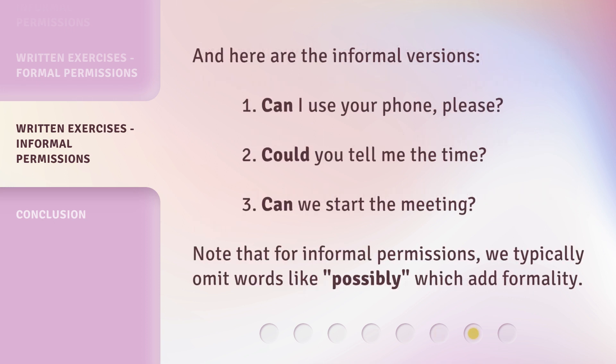And here are the informal versions. 1. Can I use your phone, please? 2. Could you tell me the time? 3. Can we start the meeting? Note that for informal permissions, we typically omit words like 'possibly,' which add formality.